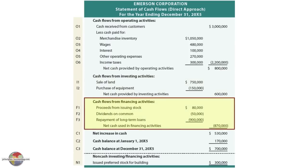The third major section is cash flows from financing activities. The financing activities have to do with borrowing money, issuing stock, repaying loan amounts, paying dividends, and so on.